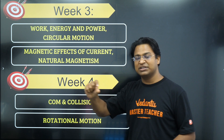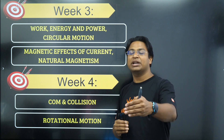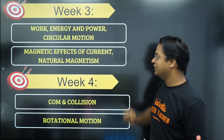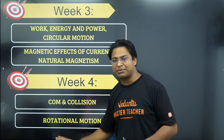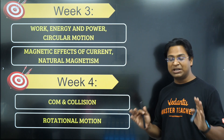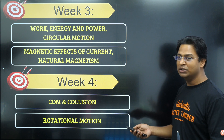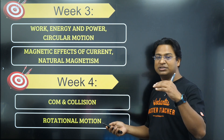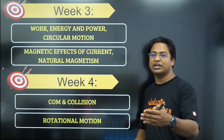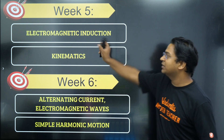Week 3 again has chapters from both 11th and 12th grade, proceeding in sequence — I'm trying to maintain that balance so that as you progress through the weeks, more and more 12th grade chapters get covered. In Week 4, I have not included any 12th grade chapter because Centre of Mass and Collisions and Rotational Motion are bulky 11th grade topics needing ample time. We also want to delay the 12th grade chapters — like Electromagnetic Induction and Alternating Currents — to allow time for them to be covered at your institute.